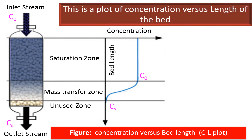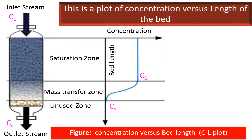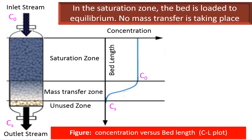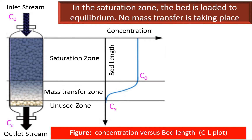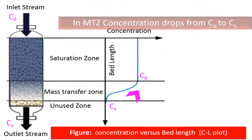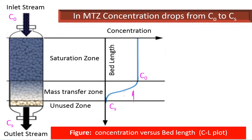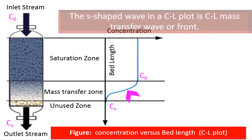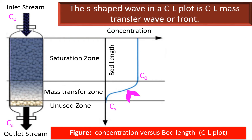This is a plot of concentration versus length of the bed. In the saturation zone, the bed is loaded to equilibrium and no mass transfer takes place as the gas flows through the zone. In the MTZ, concentration drops from C0 to Cs. The S-shaped wave in a concentration-length plot is the mass transfer wave or front.